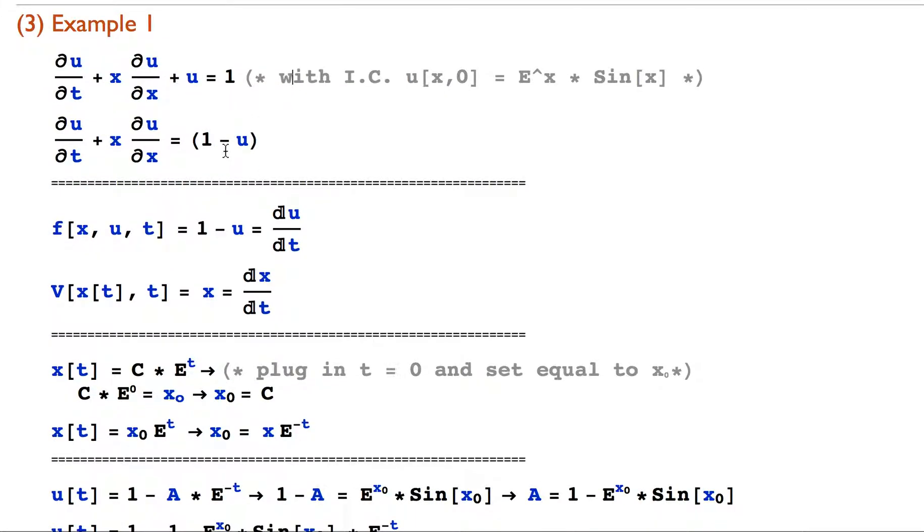Quickly we can write that f of x, u, and t is equal to 1 minus u, and set that equal to the full derivative of u as per above. And V of x and t is equal to x, which is the coefficient of the position derivative, and set that equal to the derivative of position with respect to time.